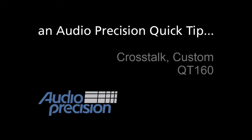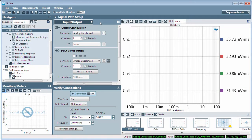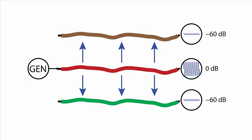In this Quick Tip, we're going to take a brief look at the Crosstalk Custom measurement in APX500. Crosstalk is unwanted leakage or bleed of a signal from one or more channels into other channels within a device.